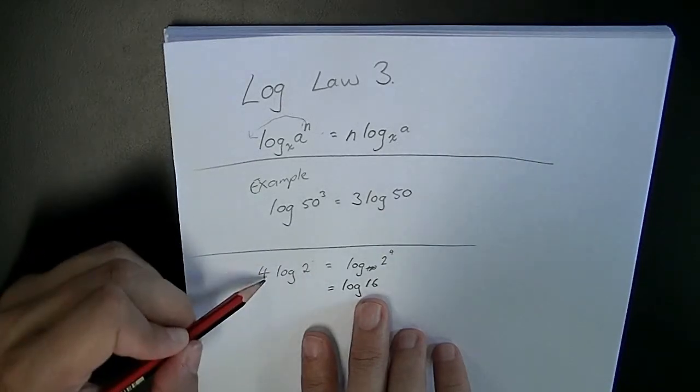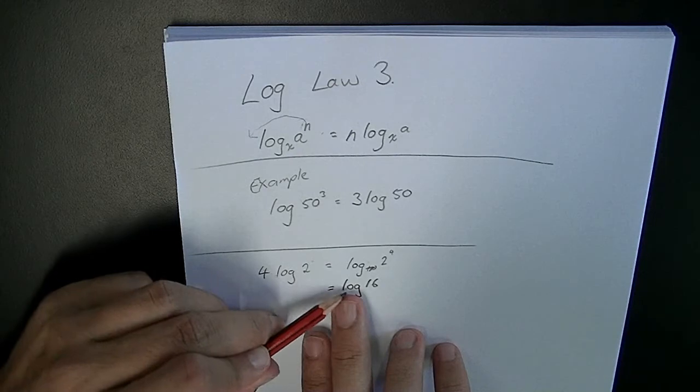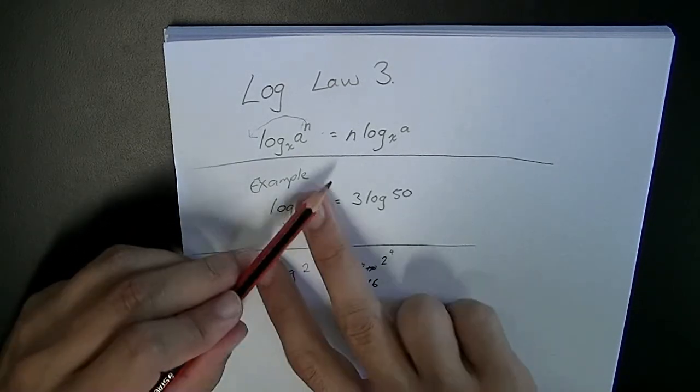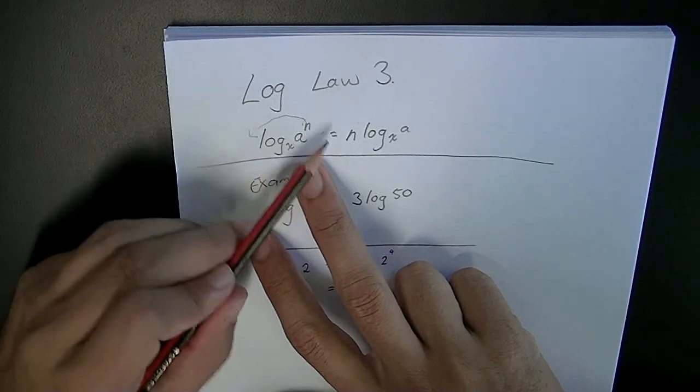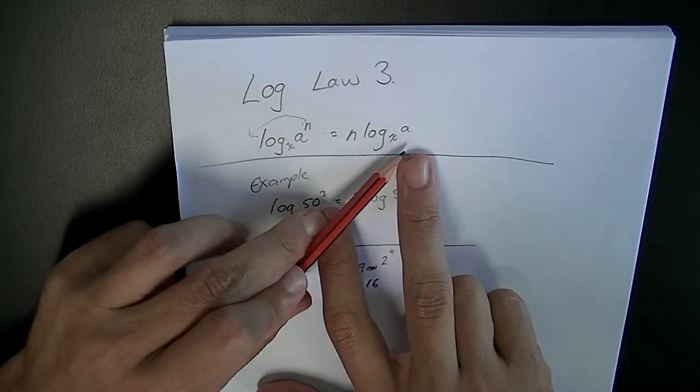So we can see here that 4 times log base 10, 2 equals log 16 using that log law. This one here, don't forget this log law, really useful. Log base x, a to the power of n equals n log base x, a.